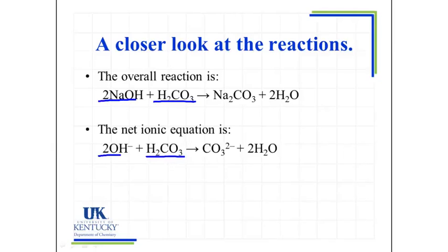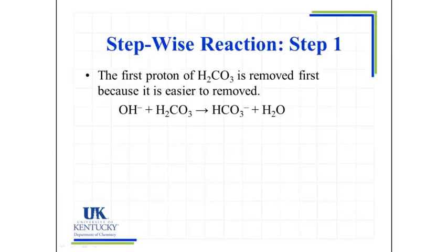But when this reaction takes place, an OH doesn't pull off both protons off the carbonic acid at a time. What it does is it occurs in a stepwise fashion. The first step will be the removal of the first proton. It'll be the easiest one to pull off of the H2CO3. So we will be removing one of these protons and forming the bicarbonate ion during this first titration curve.